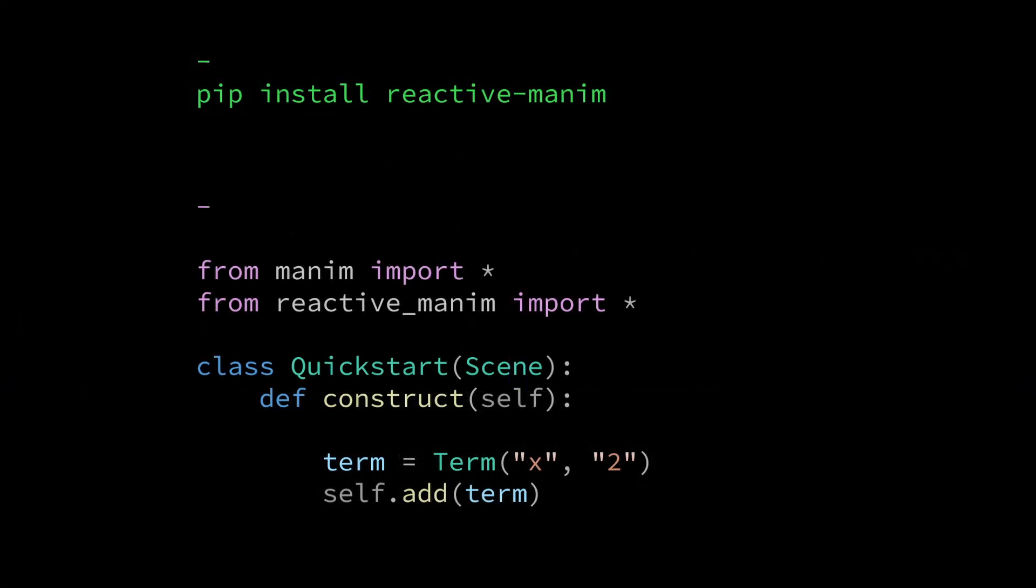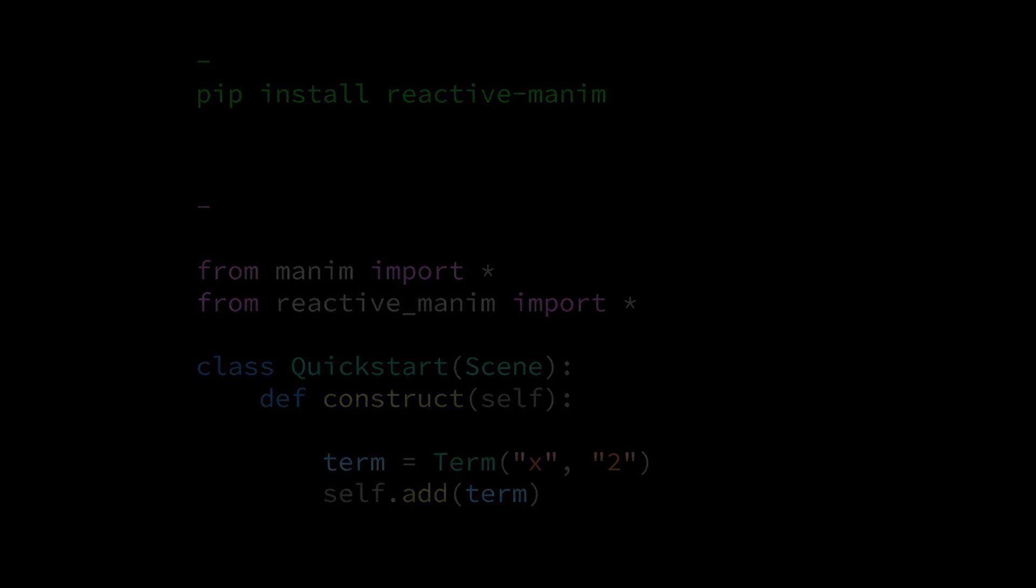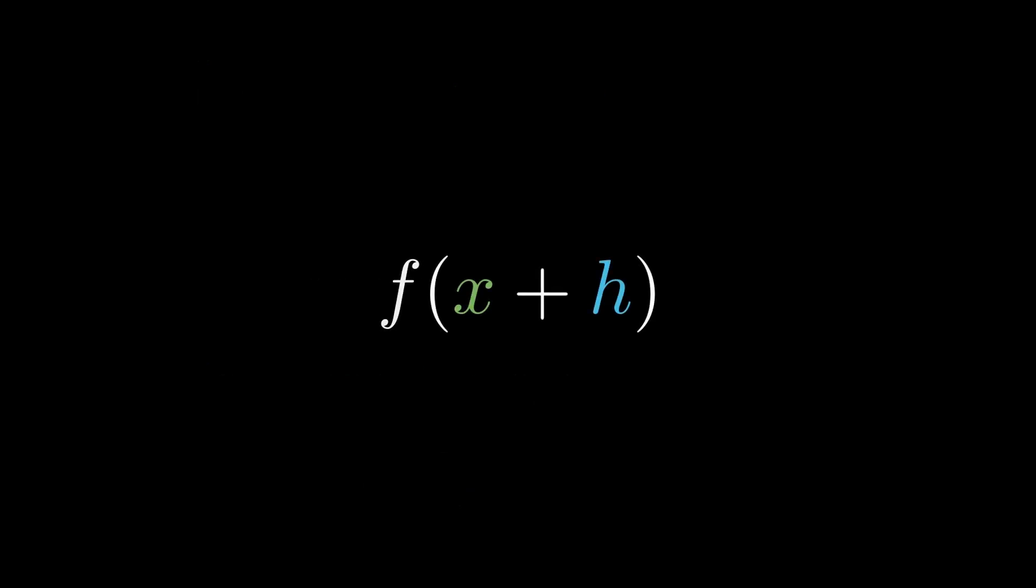Before we start, if you use Manim Community Edition then you can install this extension by the command pip install reactive manim. Let's start with a portion of the animation pertaining to x plus h squared.